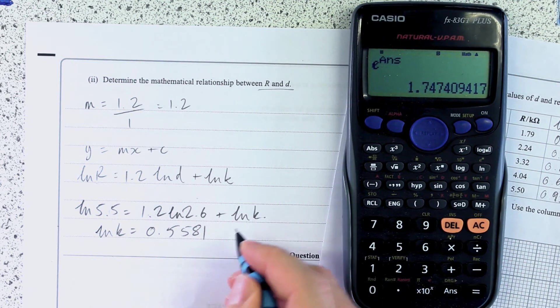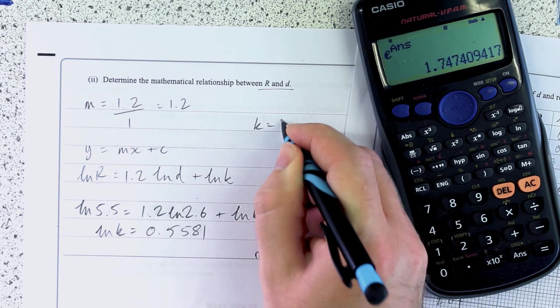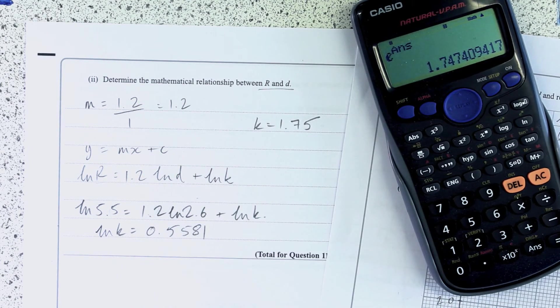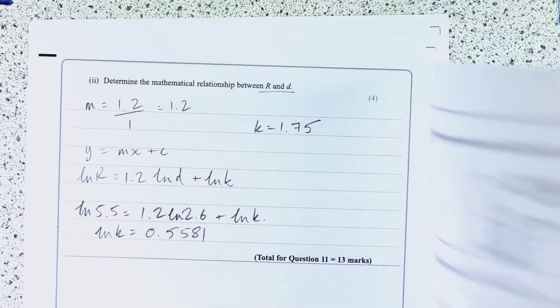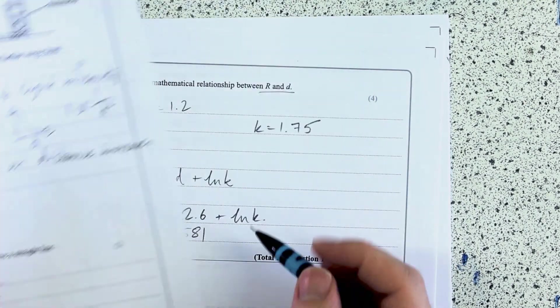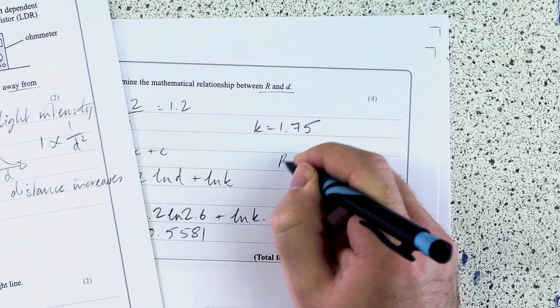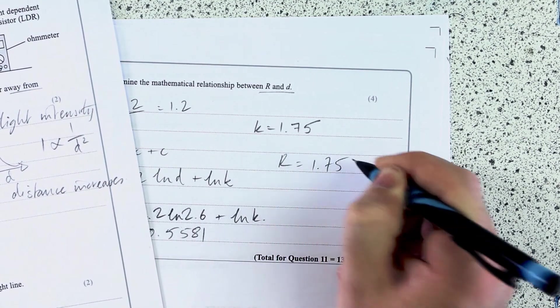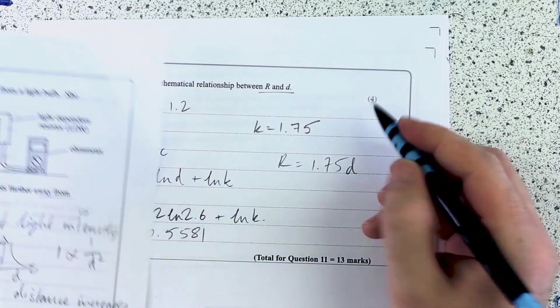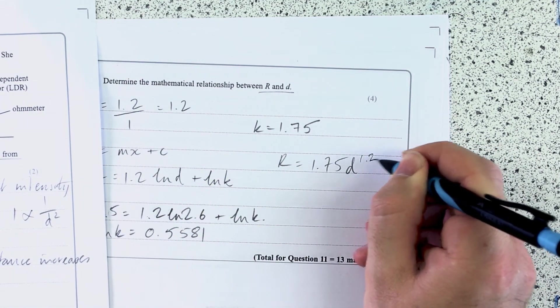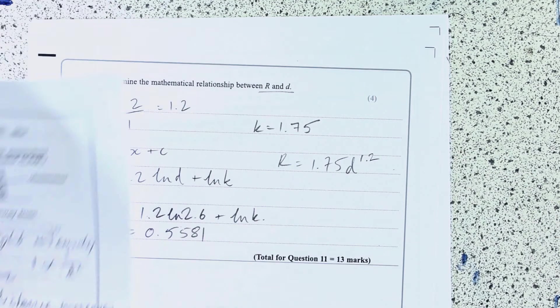747 is a 1.75, which is close enough to my final answer. Then, lastly, put it all back into this relationship here, so R is 1.75 D to the power of 1.2. That is the mathematical relationship between R and D.